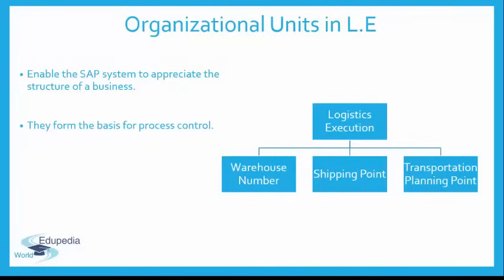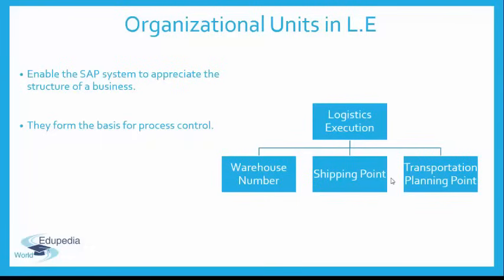Secondly, we have the shipping point, which maps the actual location or group of people handling shipping activities for an organization. It could be a group of people in charge of shipping, or a physical location where shipping is handled. The shipping point is essentially a pointer — it maps the location where the actual shipping is occurring. More than one shipping point can be defined depending on an organization's requirements. For example, if an organization has different depots that process shipments, you can have multiple shipping points representing each separate depot.